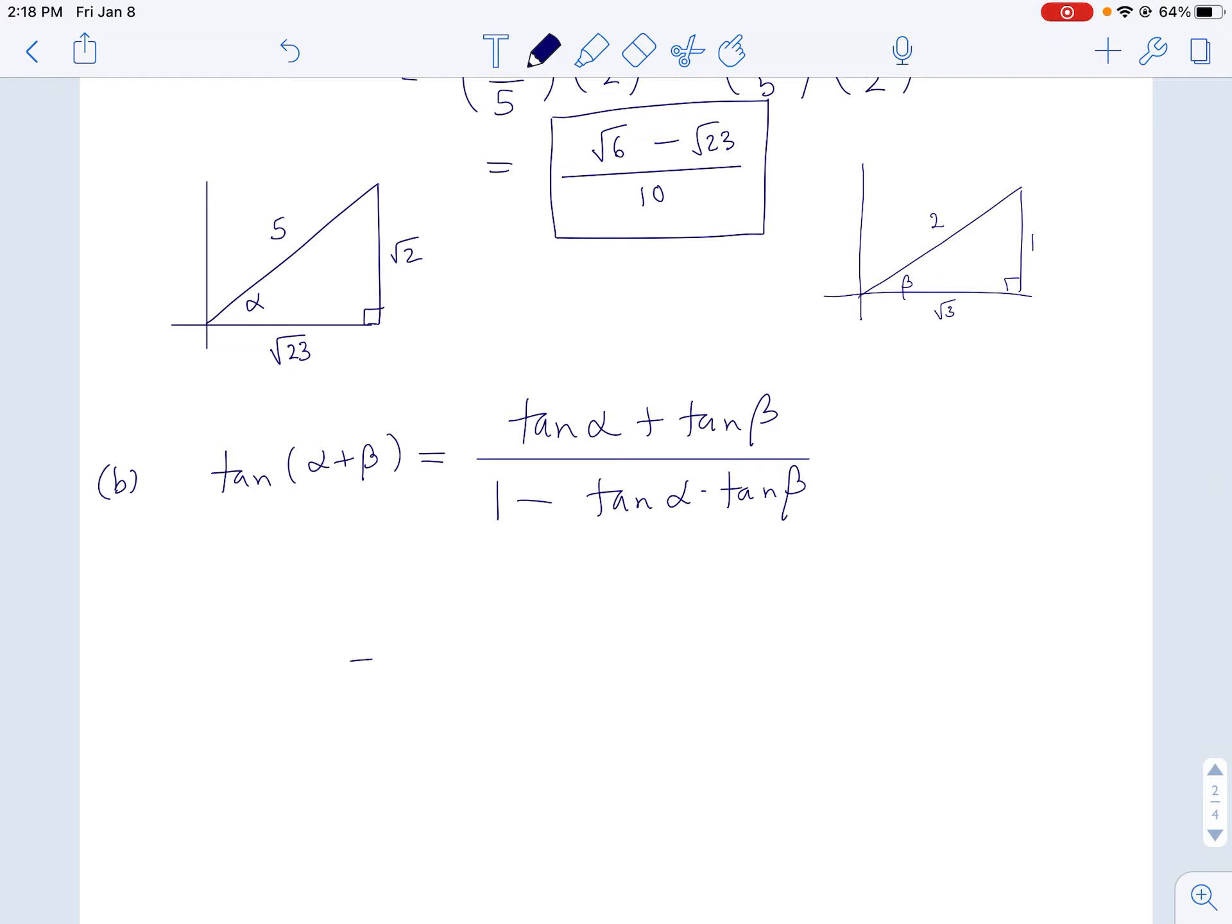Alright, so what we got to do is plug in using my reference triangles. And just a reminder, my alpha triangle has an opposite of root 2 and an adjacent of root 23. So tan alpha is actually root 2 over root 23.